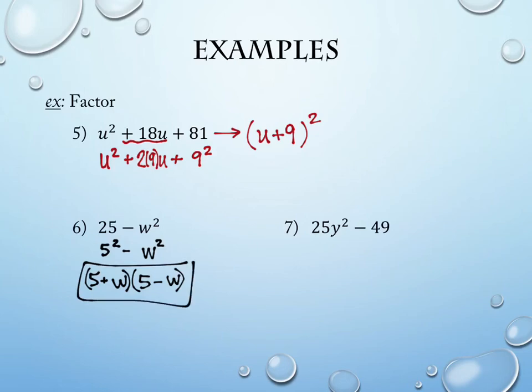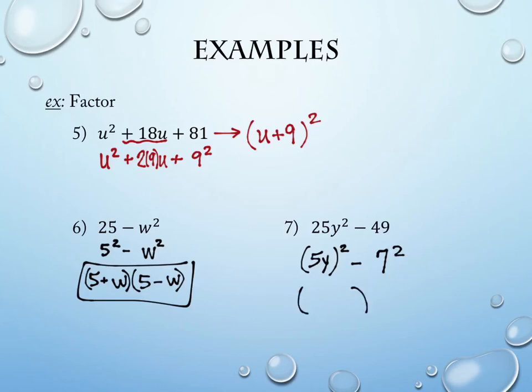For problem 7: what's being squared in 25y²? There's a 5 and a y both being squared, so the term is 5y. And for 49, that's 7 being squared. So the pieces being squared are 5y and 7. My parentheses say (5y + 7)(5y − 7) — in whatever order you like.